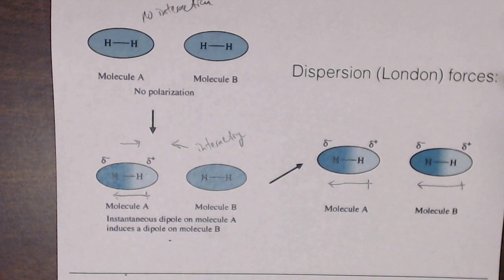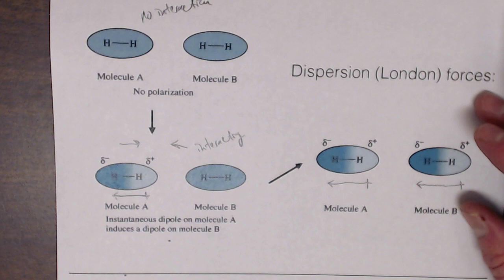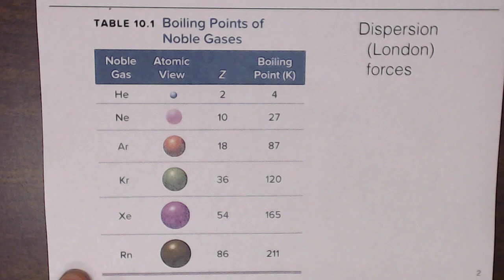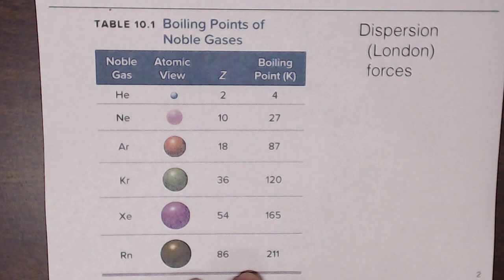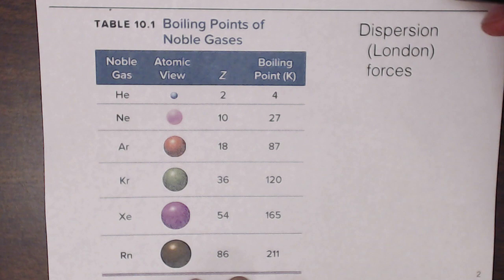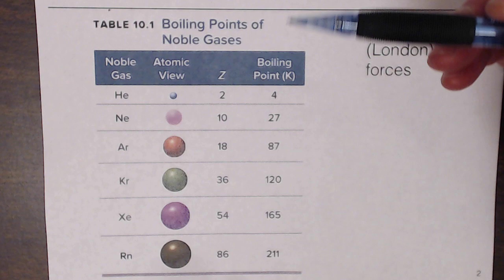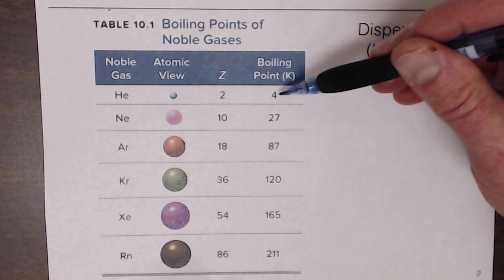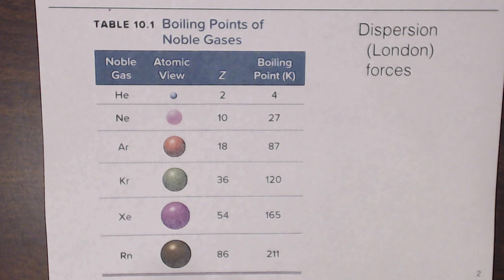The weakness of dispersion forces is evidenced by the boiling points of noble gases. We can discuss dispersion forces between atoms or molecules — noble gases are non-polar and stable as atoms. Helium boils at only 4 Kelvin, meaning it takes just 4 Kelvin to separate helium atoms in liquid and make them a gas. That extremely low boiling point indicates very weak forces between the molecules.